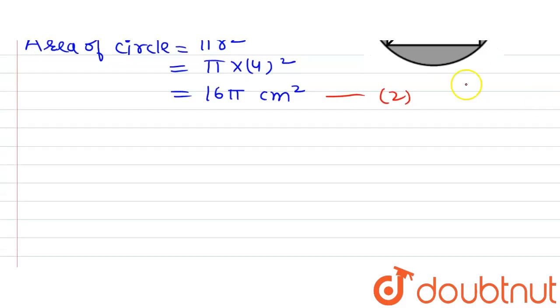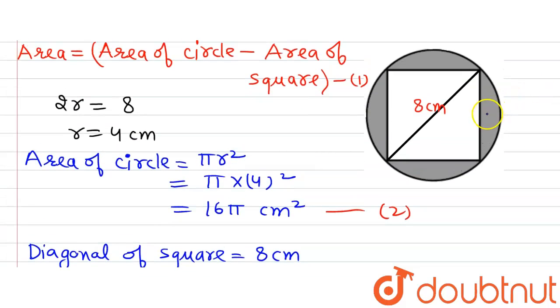Now we will find out the area of square. Diagonal of square equals 8 cm as given in the question. Let's assume the side of the square to be a, because all the sides of the square are equal.